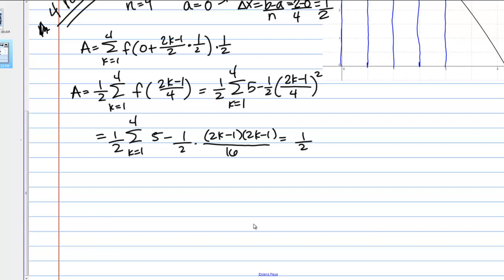We need to FOIL that out. 5 minus, this is 1 over 32 times, if I FOIL that, I get 4k squared minus 2k minus 2k, so minus 4k total plus 1. Moving on along, we should go ahead and distribute that 1 over 32. If I do that, I've got 4 over 32, that's 1 over 8. 1/8 k squared plus 1/8 k, be careful with your signs there, minus 1 over 32.